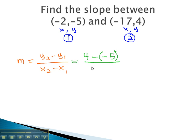Over x2, x from the second point, is negative 17, minus x1, x from the first point, is negative 2.